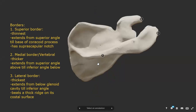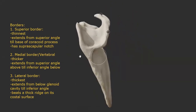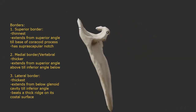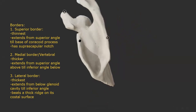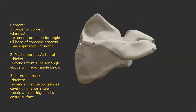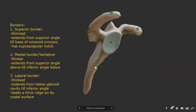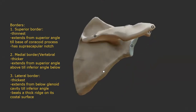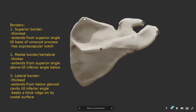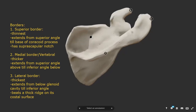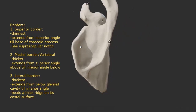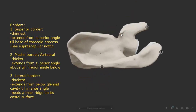The scapula has three borders. The superior border is the thinnest of all the borders. Comparing it in side view with the medial and lateral borders, you will realize it is thinner than both. It extends medially from the superior angle up to the root or base of the coracoid process, where it exhibits a U-shaped depression known as the suprascapular notch.